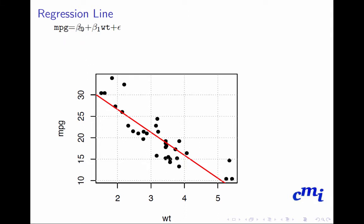How do we fit a straight line? The straight line relationship will be: miles per gallon is a function of β₀ plus β₁ times the weight (the x-axis) plus some error. What is error? If we consider a weight of say 2.1, there are two possible points. One point sits exactly on the straight line with no error, but another point is a bit away from the straight line, and this difference can be viewed as the error.